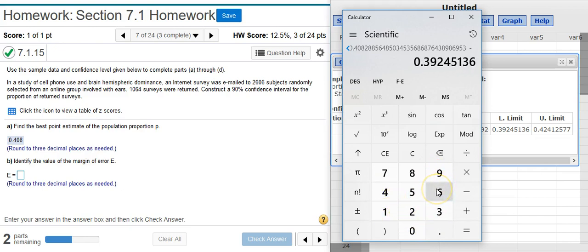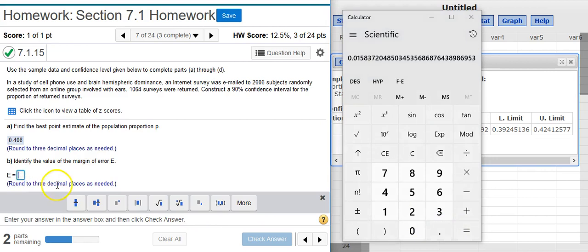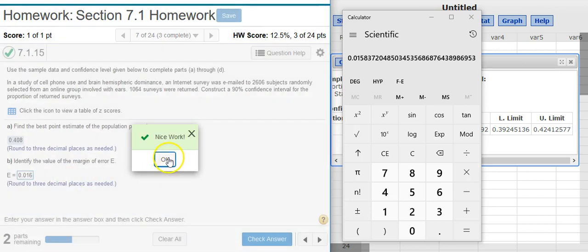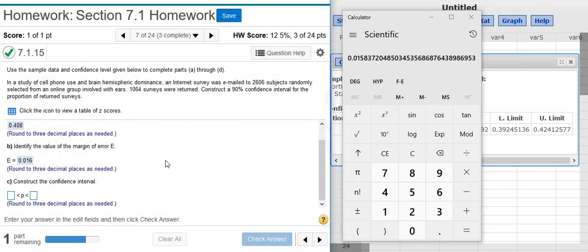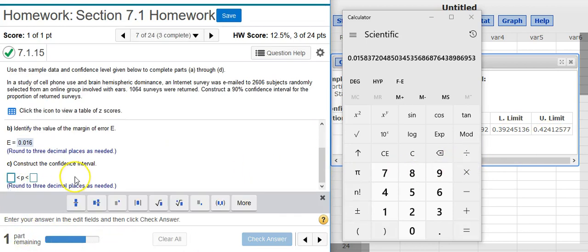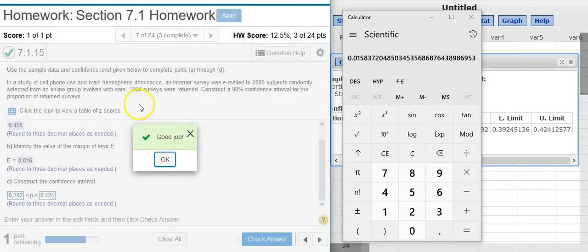And notice I'm putting in all my numbers so that I can avoid rounding errors as much as possible. And there's my margin of error. Rounds up. Nice work. And now the confidence interval just comes from the lower and upper limits there at the end of my table. So I'm going to put those in here. Good job.